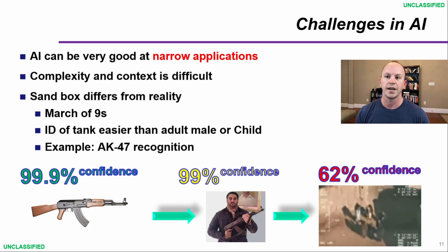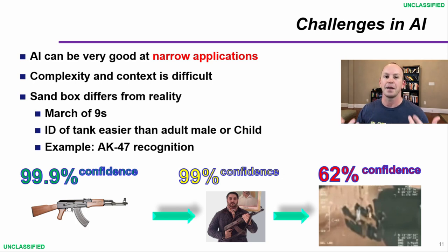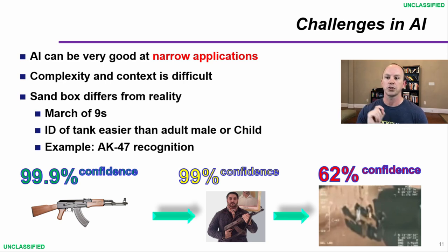Some of the challenges in AI: AI is really good at very narrow applications, and sometimes it's hard to transfer from the lab to the real world, but it's easier if you focus on a very narrow application. Complexity is difficult — you're basically trying to simplify a very complex world. When you look at this, you're considering what type of confidence do I need? Do I need 99.9% confidence? Is that good enough for human life to be on the line? And you can see that confidence drops significantly from feeding it images in the lab versus what it's actually looking at from 30,000 feet through a sensor.